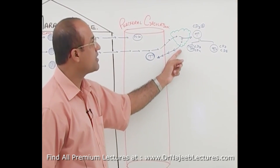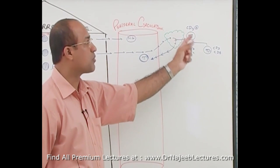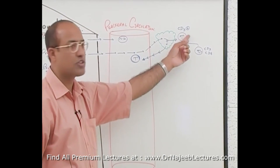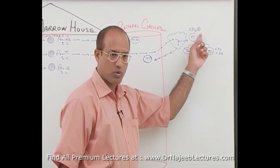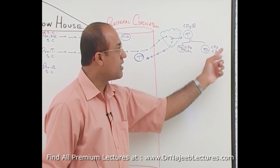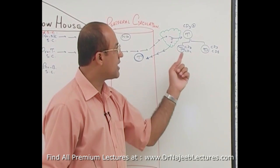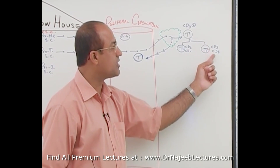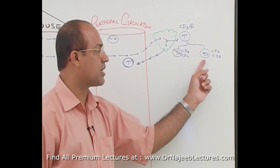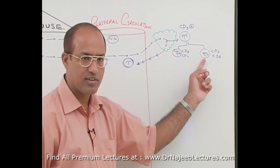Once they come out of the thymus, all T cells should have CD3 protein. CD3 is the hallmark molecule that determines whether a lymphocyte is a T cell. All T cells have CD3, but some also have CD4 and others also have CD8. When both CD3 and CD8 are present, these are called CD8-positive T cells, which act as cytotoxic cells.